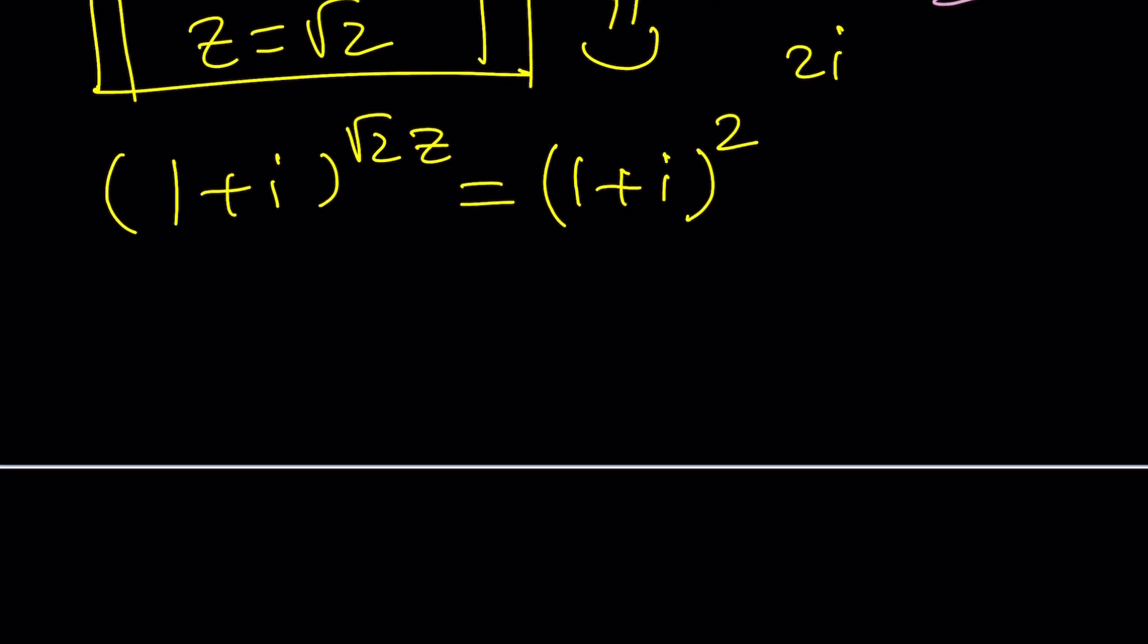If this equals that, of course, that again, simplification, then we get z equals root 2. How awesome is that?